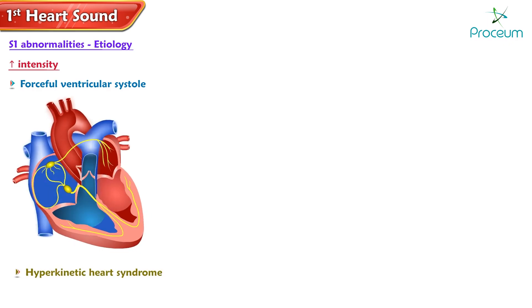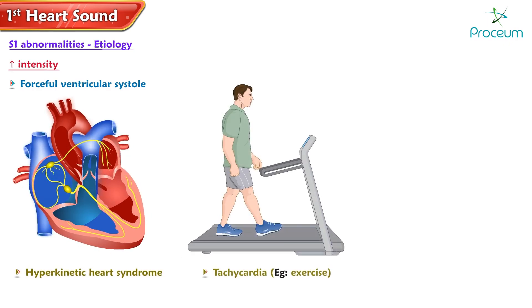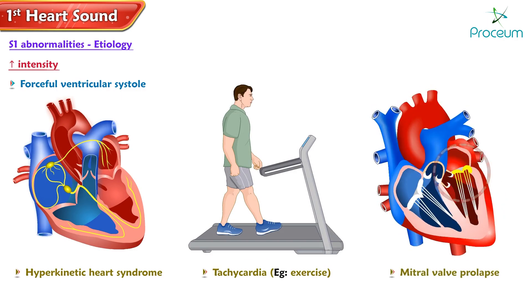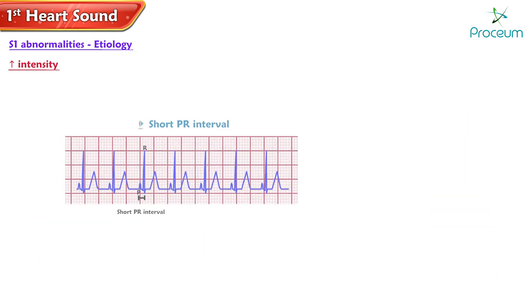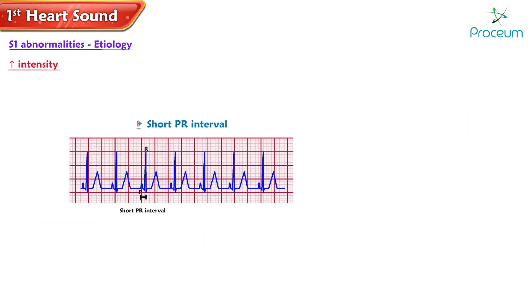Additional causes of a louder S1 include forceful ventricular systole, as seen in hyperkinetic heart syndrome and tachycardia during activities like exercise, as well as mitral valve prolapse. A short PR interval, as seen in pre-excitation syndrome and Lown-Ganong-Levine syndrome, also results in increased transvalvular flow and a louder S1.